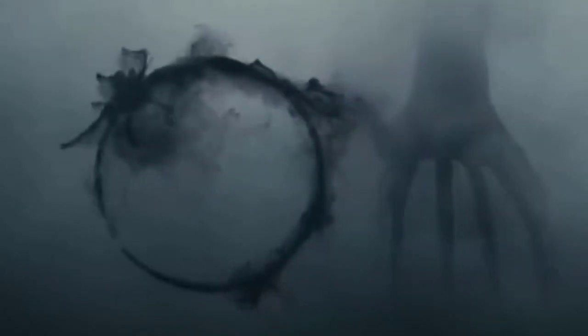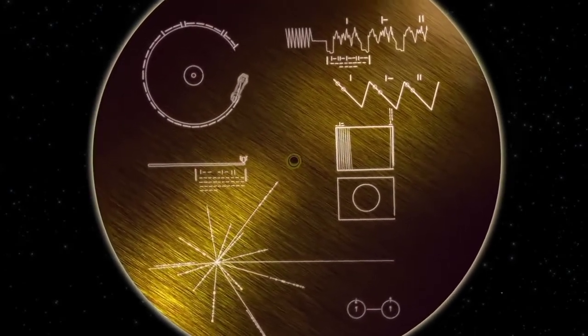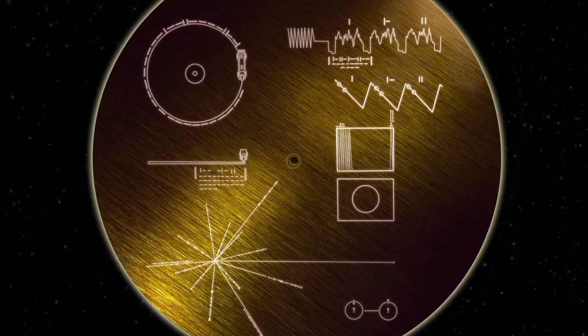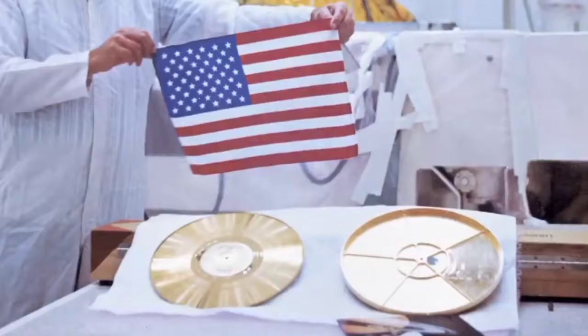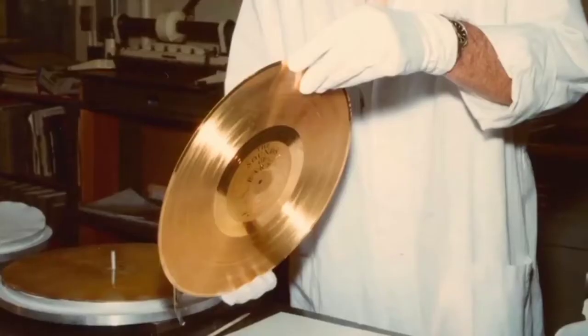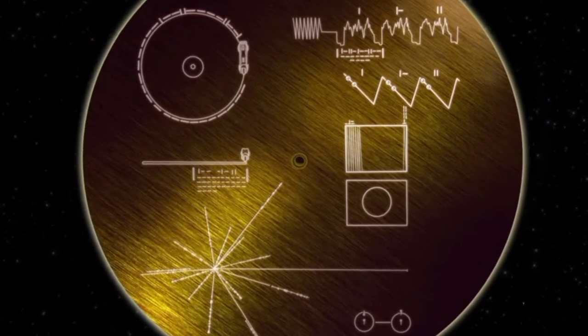Scientists at NASA created a code that any highly intelligent beings living in the universe may be able to decipher. If extraterrestrials find the golden records, then the first thing they would come across is its cover, which contains some unique symbols which are instructions on how to play the messages sent from Earth.